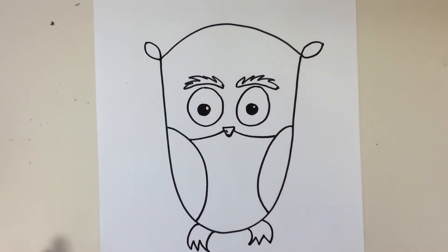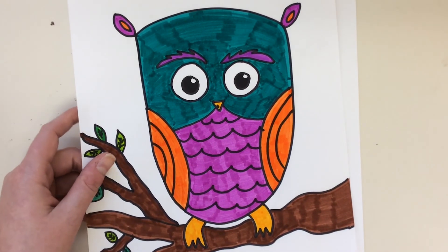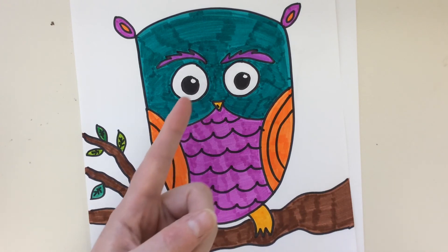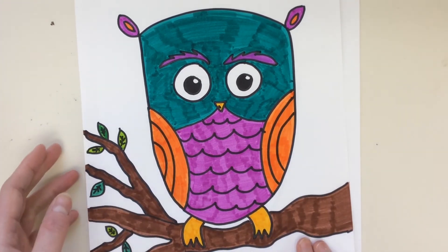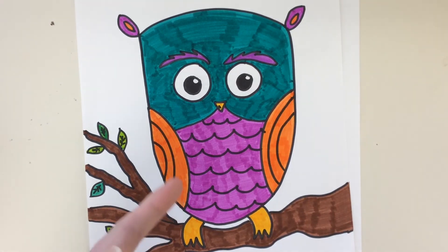Now guys, it's your turn. I want you to add your own details. Could you put him on a branch? Yes. Could you add patterns and details to his body? Yes. And do I want you to give him color? Absolutely. I can't wait to see what you guys come up with.